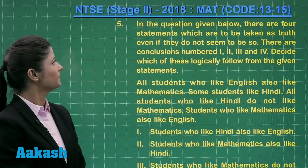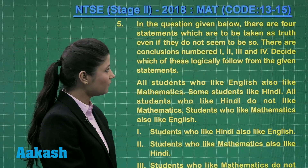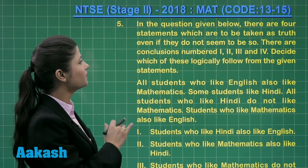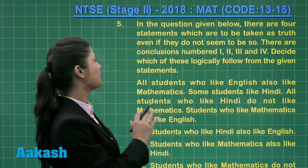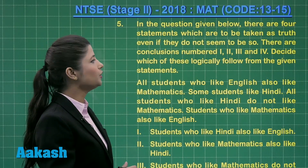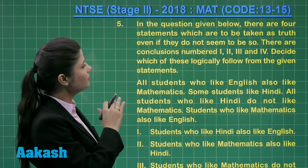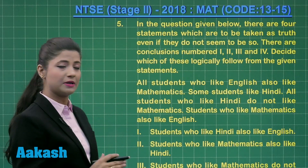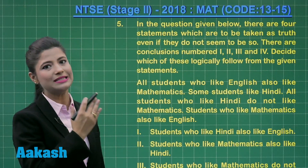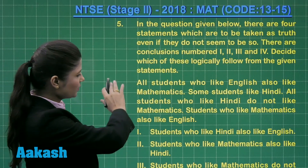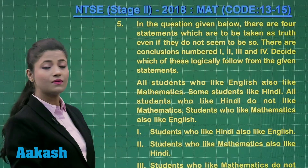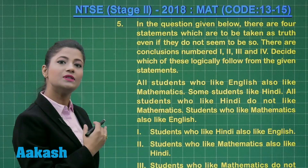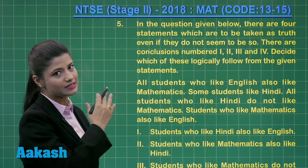Let us solve question number 5. Here it states: in the question given below, there are four statements which are to be taken as truth, even if they do not seem to be so. There are conclusions numbered 1, 2, 3 and 4, and decide which of these logically follow from the given statement. This is a question related to statement analysis. You have to read the statement and, on the basis of that, you are provided with four conclusions. You need to check which of these conclusions follows the given statement.